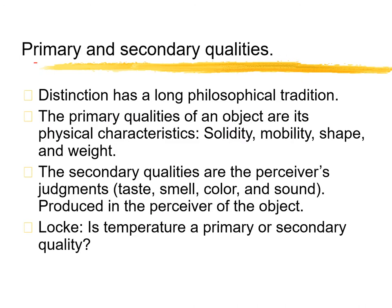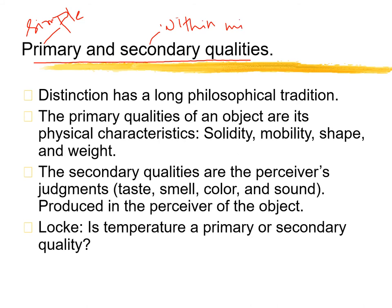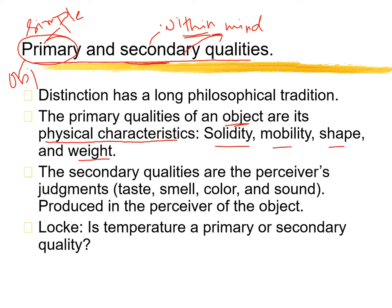Locke then describes two kinds of qualities. First we discussed ideas — simple and complex. Similarly, there are primary and secondary qualities. Primary qualities are like simple qualities: they are the physical characteristics of the object itself — solidity, mobility, shape, weight, dimensions. These are directly in the object.